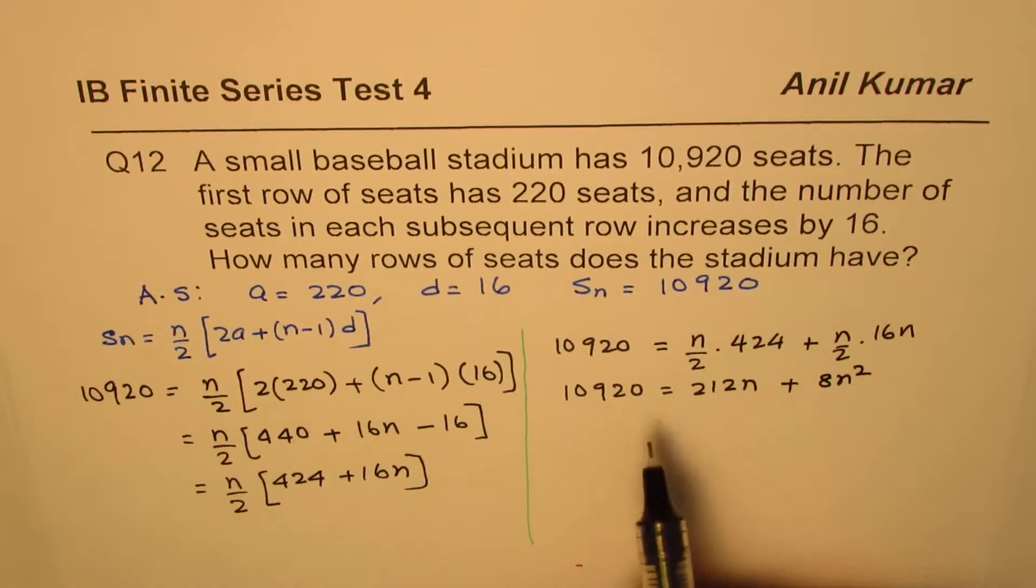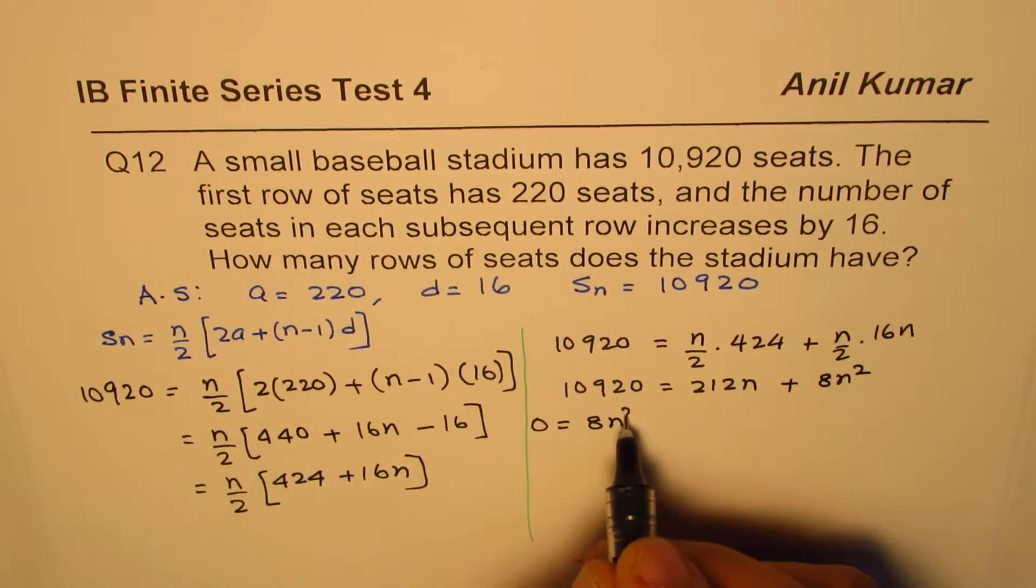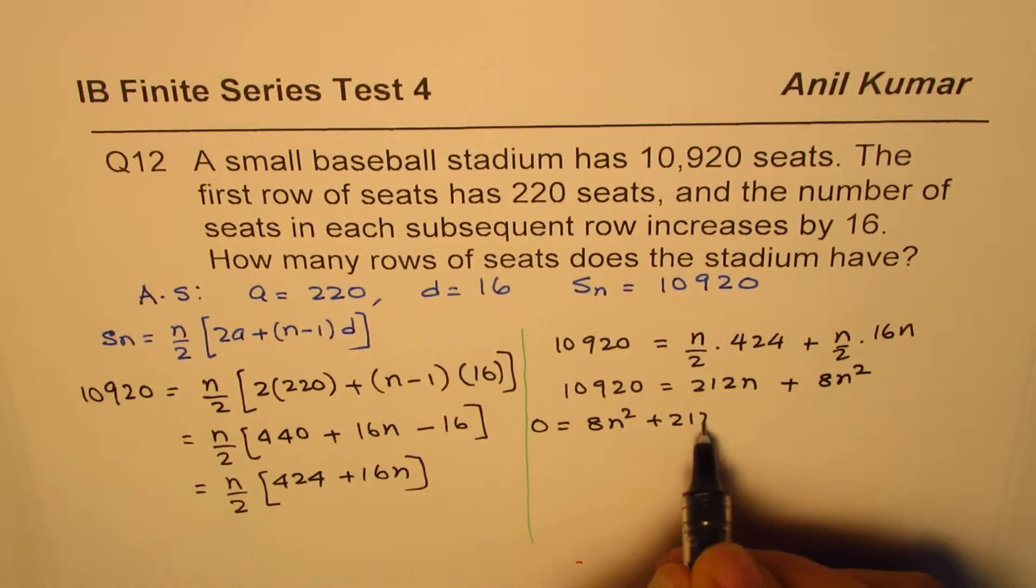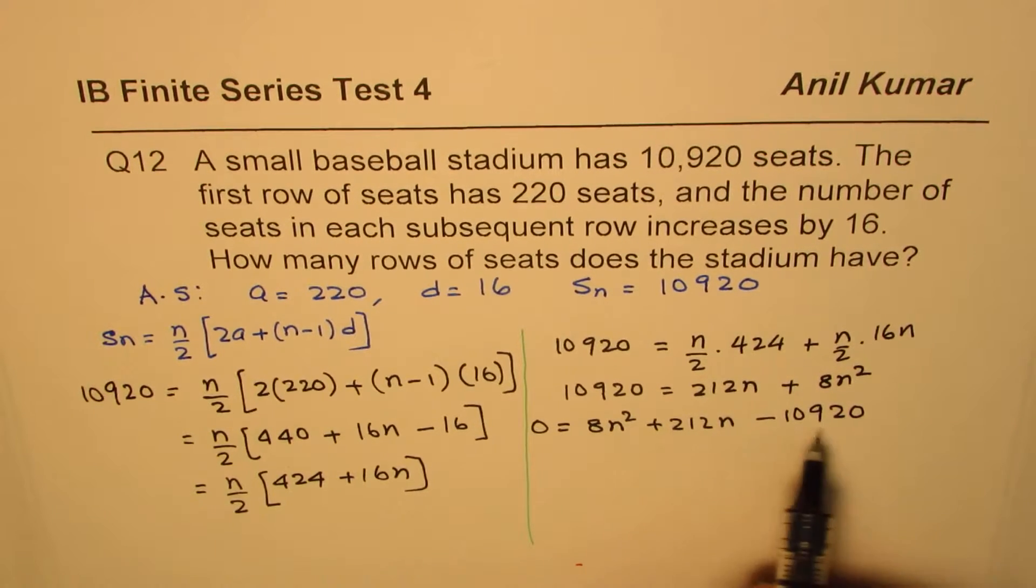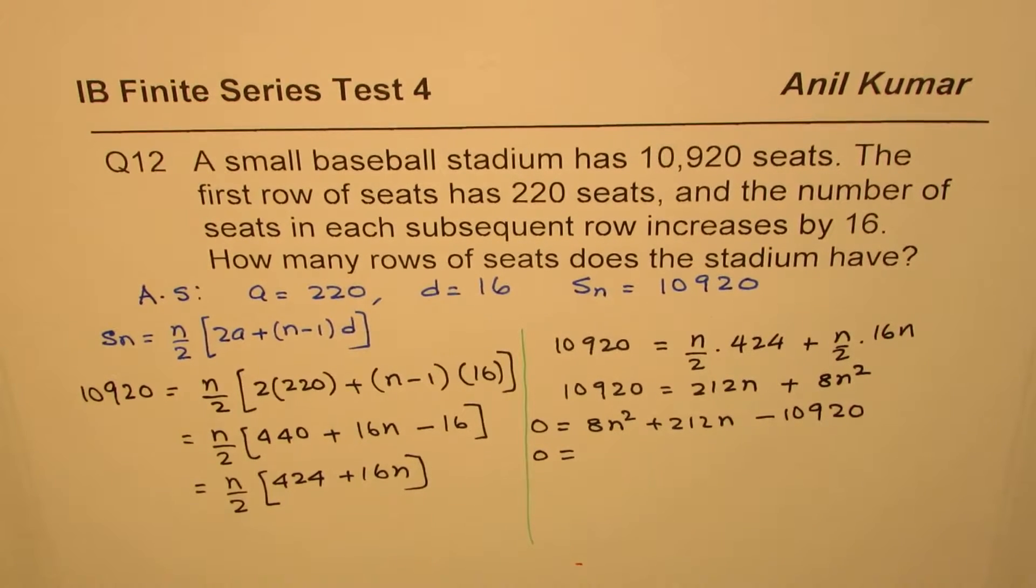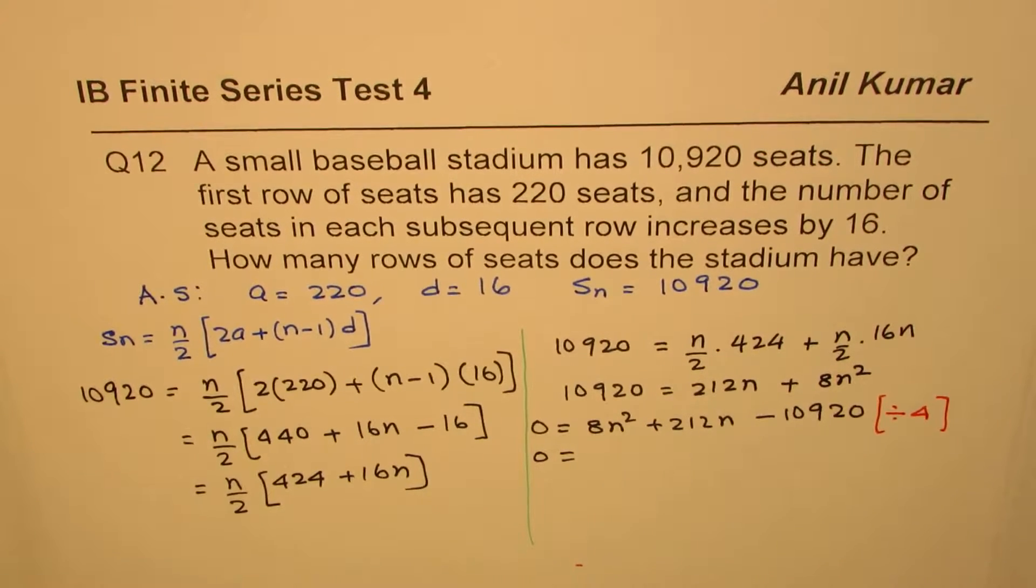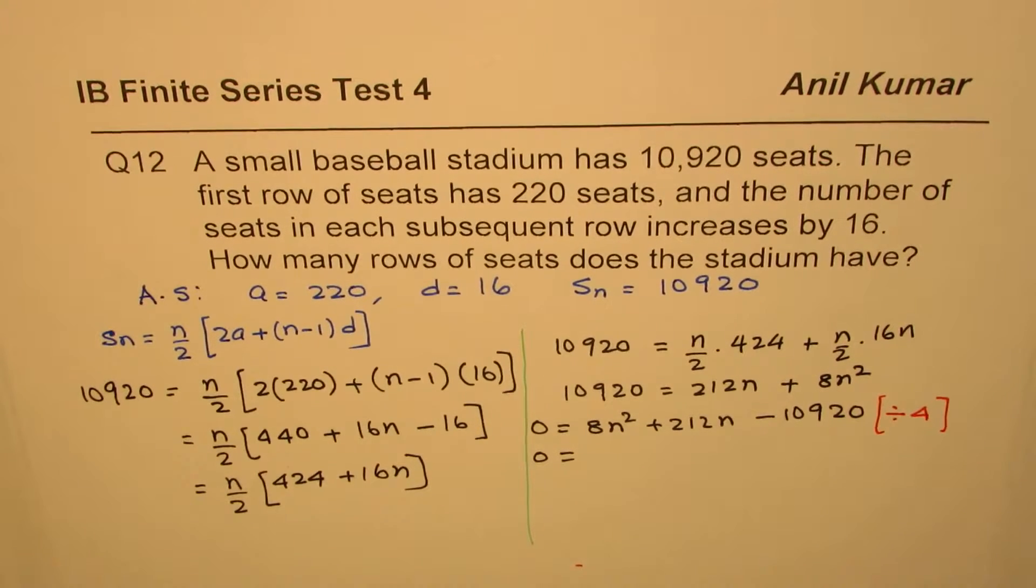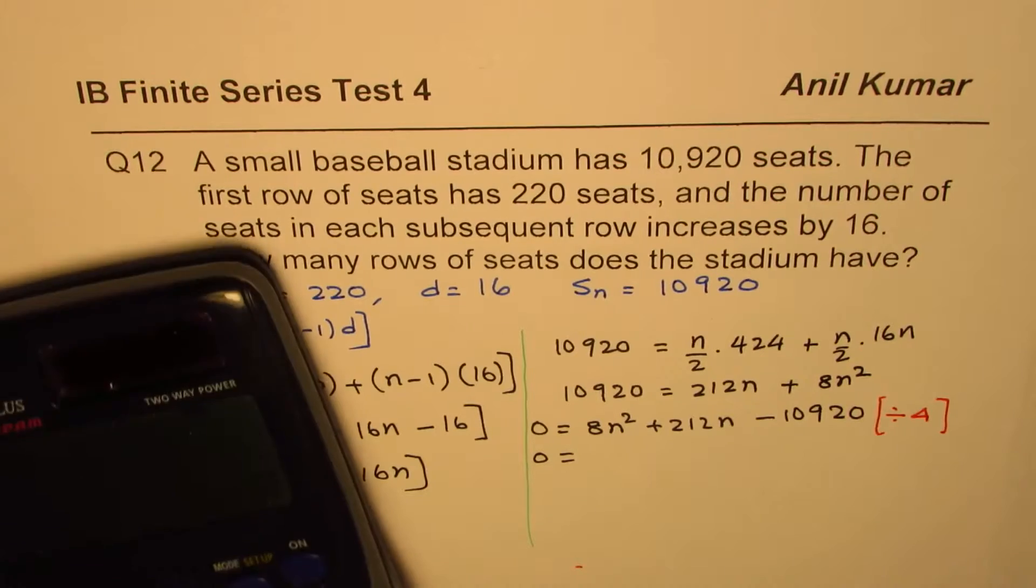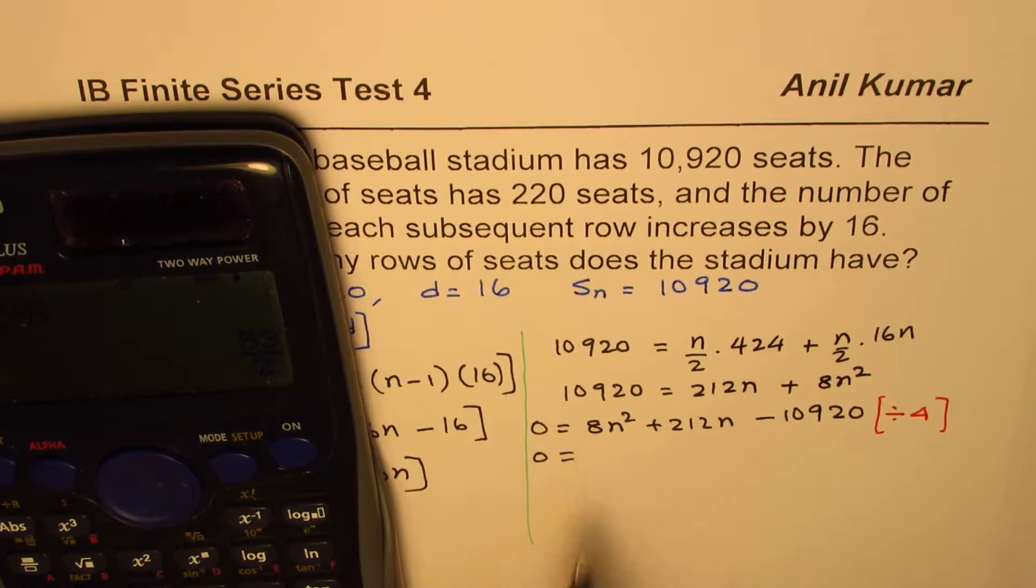So that is what we get. Now what we can do is we can bring all the terms together. So let's write down 0 equals to 8n² plus 212n minus 10,920. Now since all the terms can be divided by 4, let's just divide everything by 4 so that we have a simpler equation.